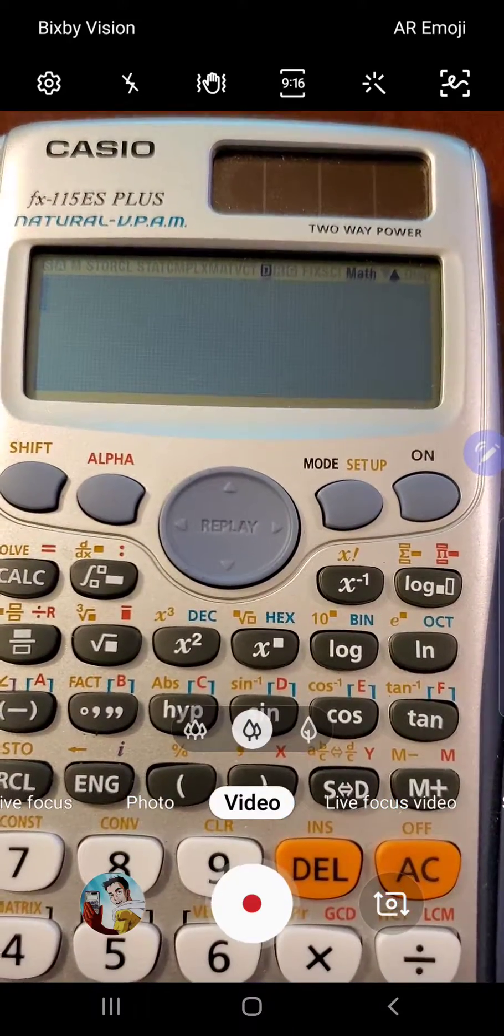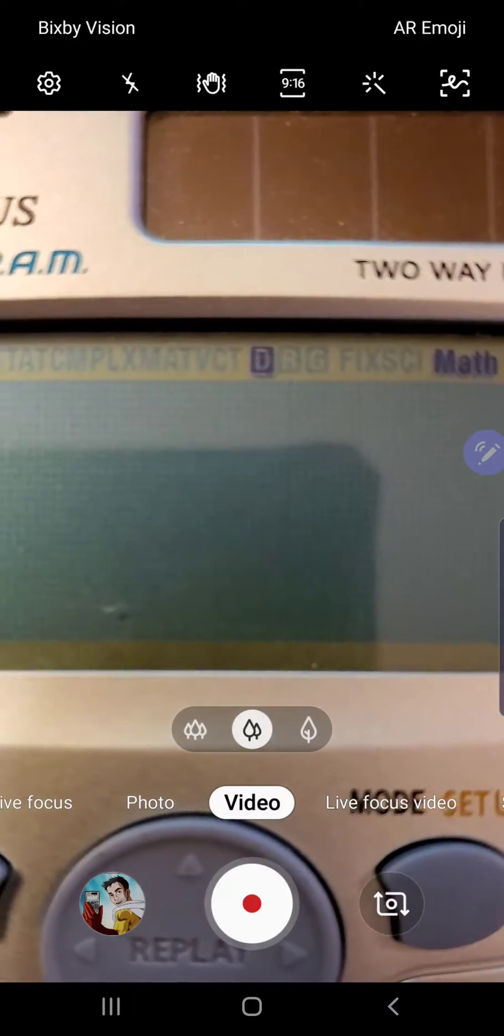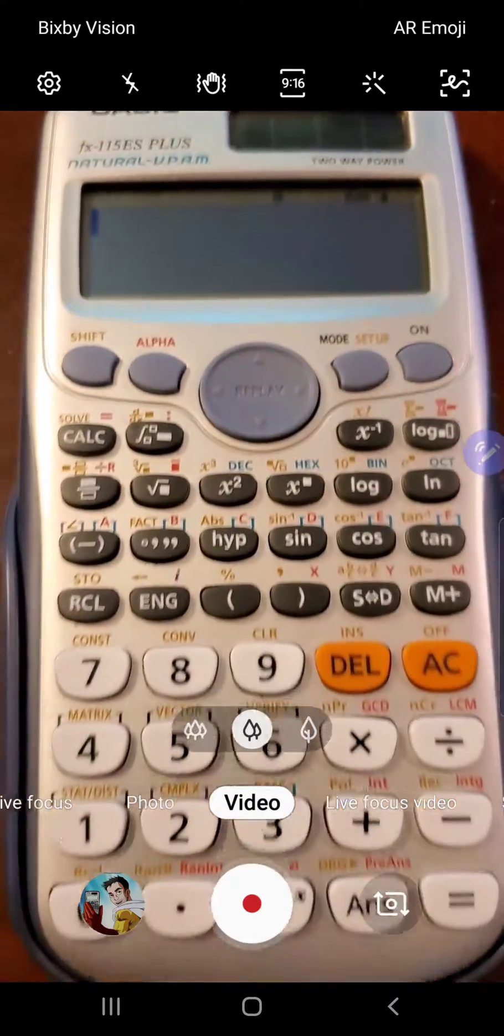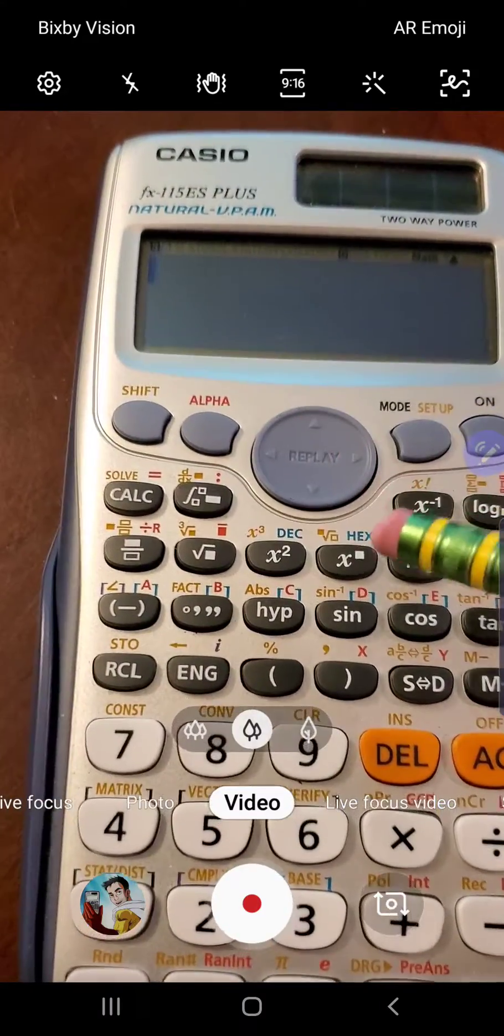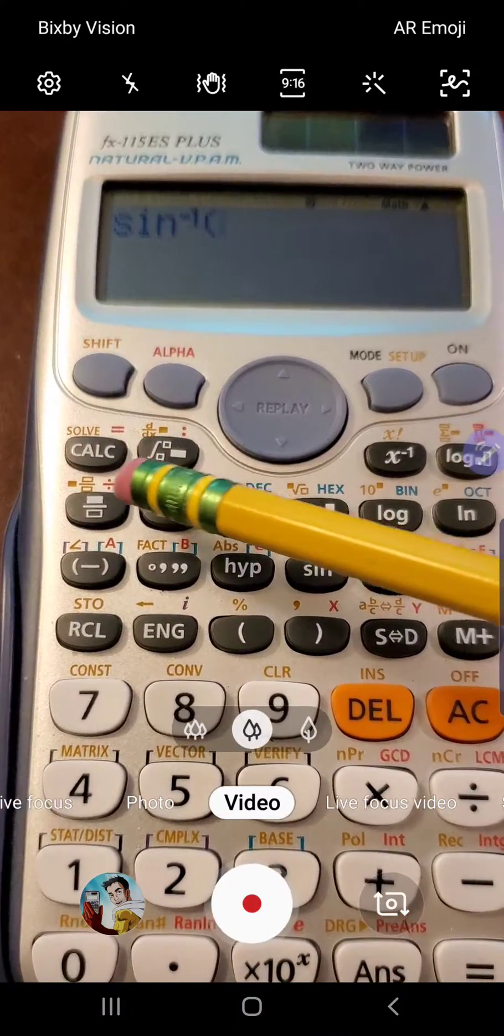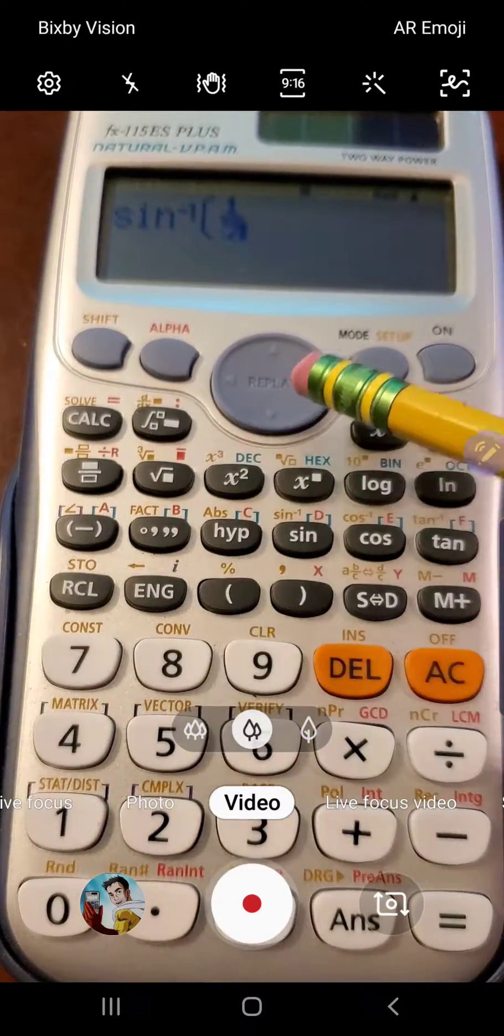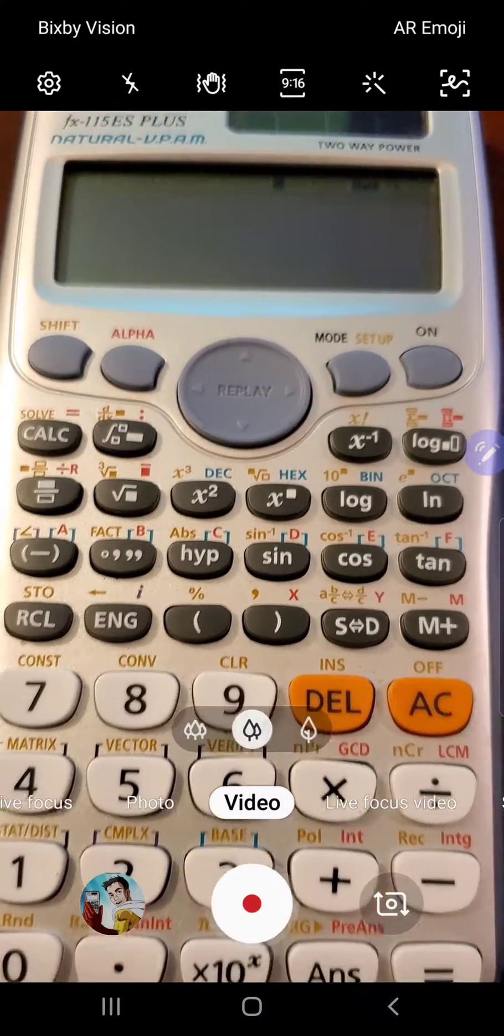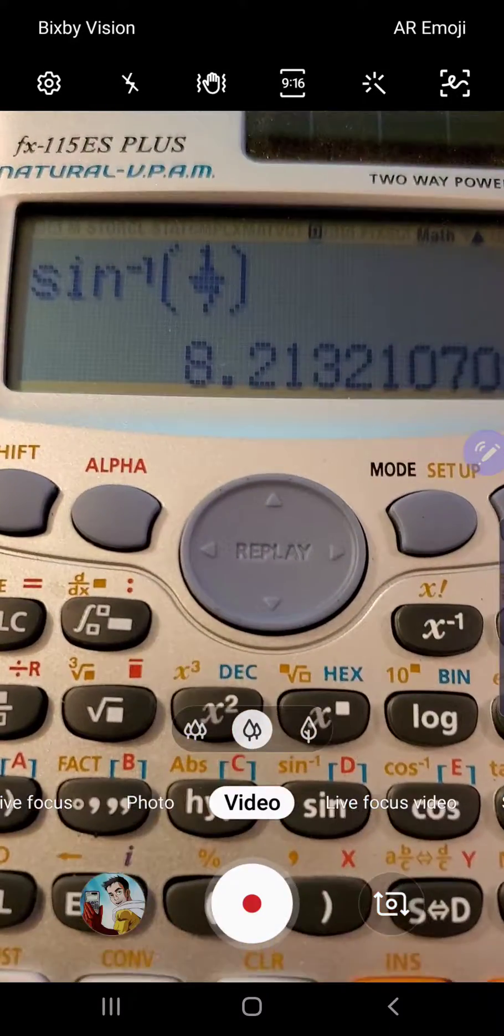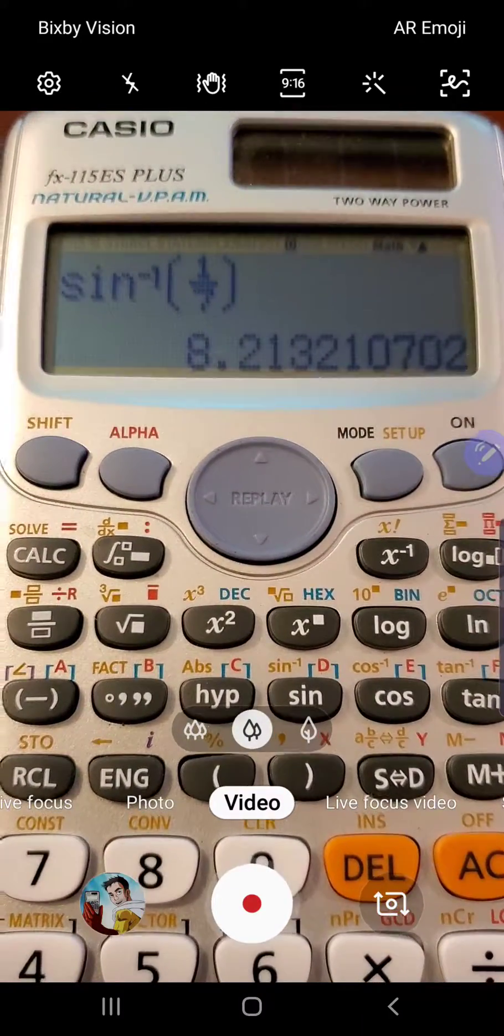So we're using the Casio FX 115 ES+. We're going to make sure that we are in degree mode, and then we're going to hit inverse sine of 1/7. Equals, and we get 8.21 rounded to the nearest two decimal places.